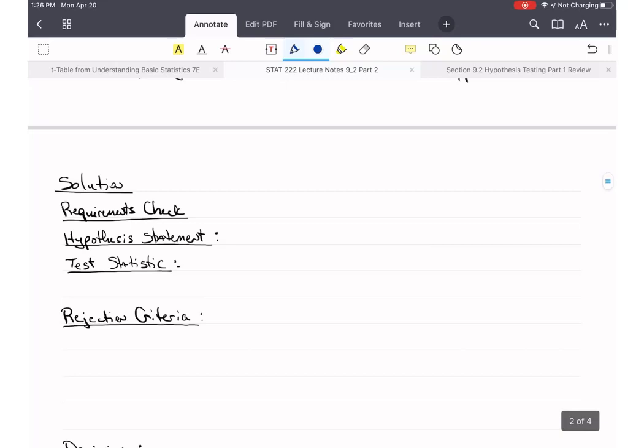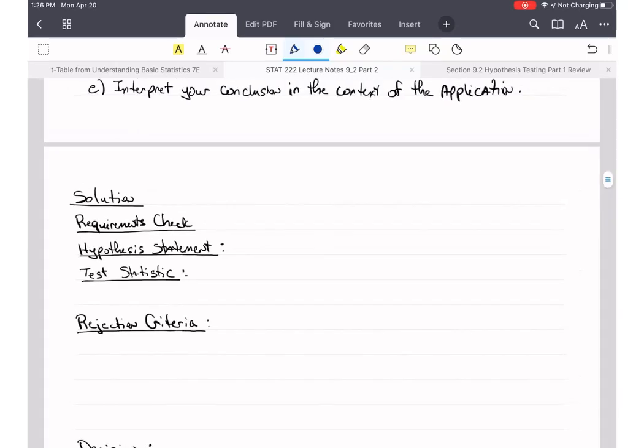We're going to do the same thing, our requirements check. We have N is not equal to 30 or greater, so that's not good. But the data is normally distributed, so we're good for the requirements check. Remember, if we don't know the distribution, as long as we have N equals 30, we can still use the central limit theorem to get the answer and use these same formulas. Otherwise, to use these same formulas, we have to know that the original data was normally distributed.